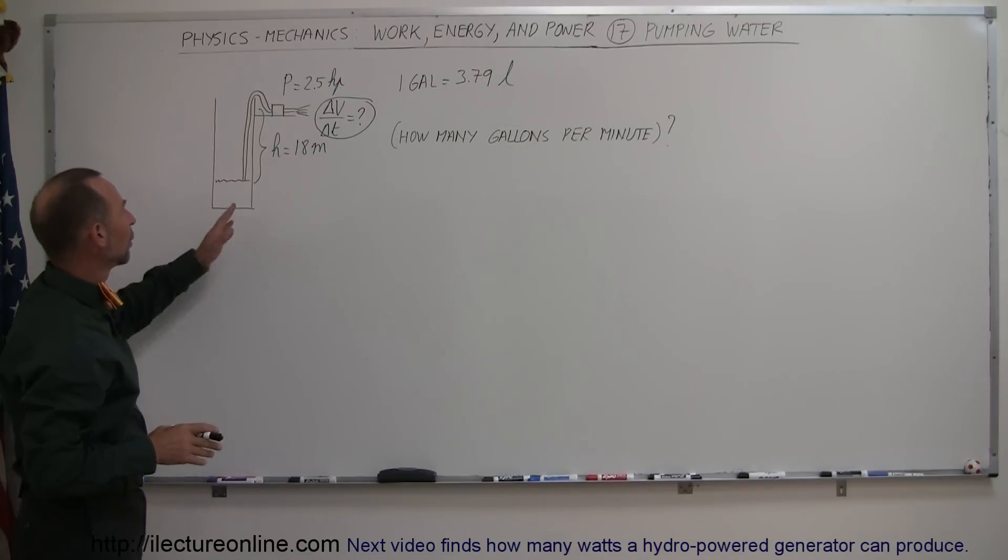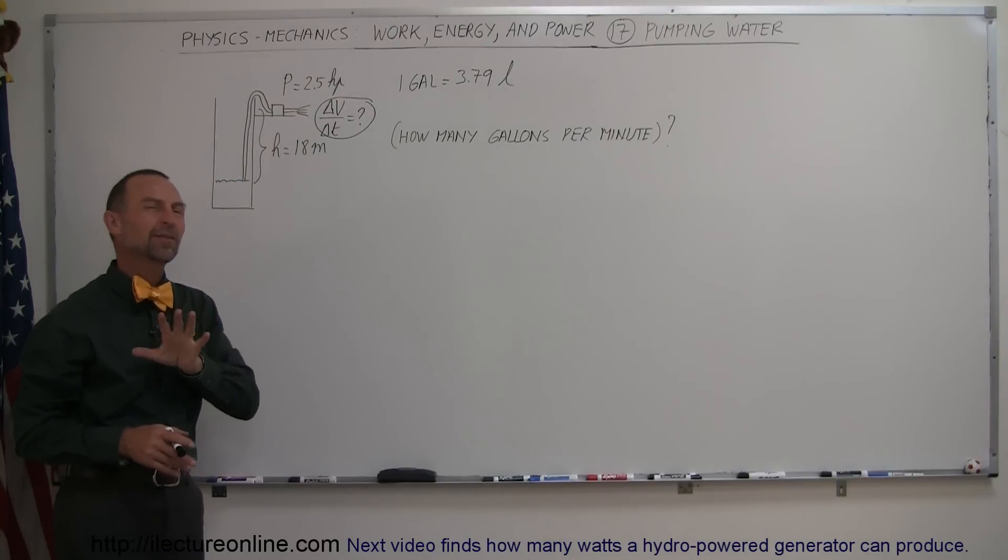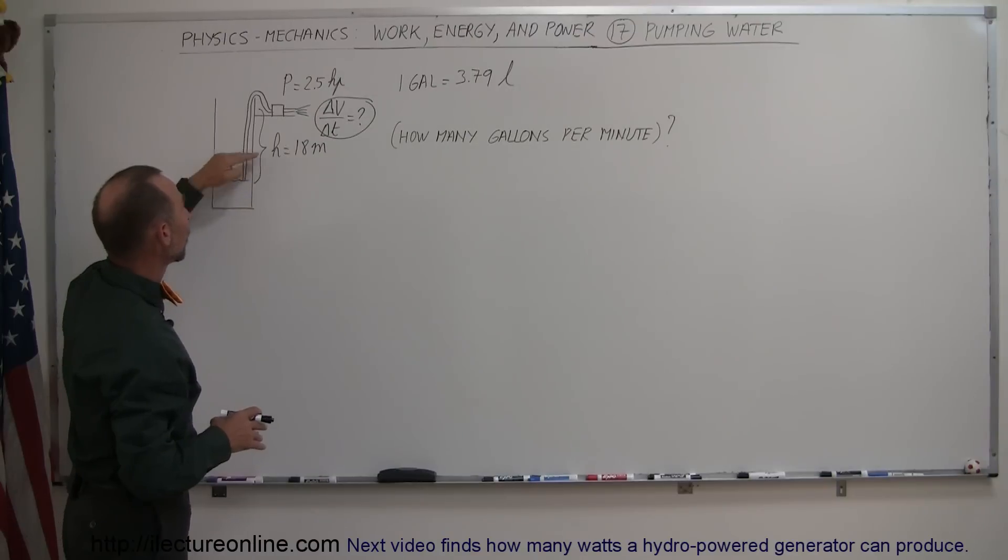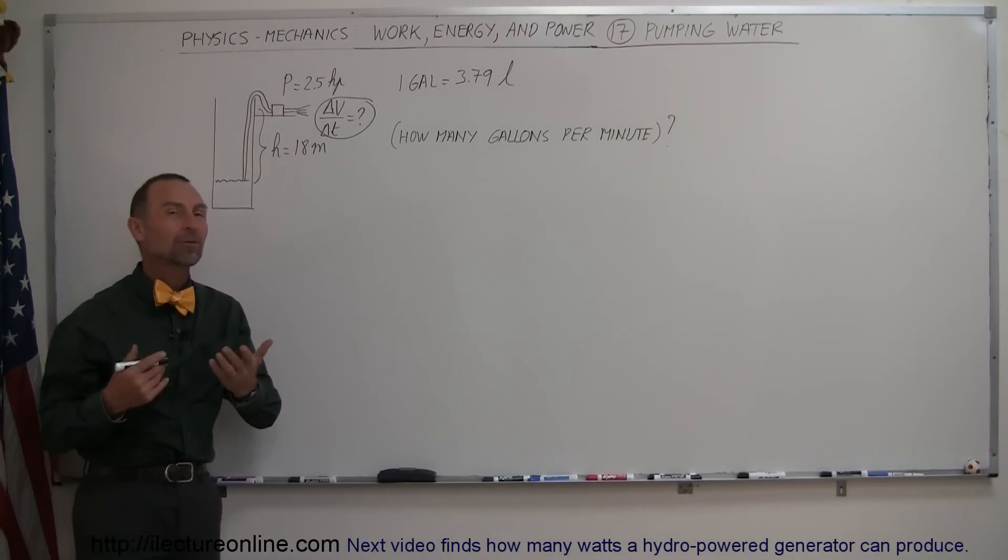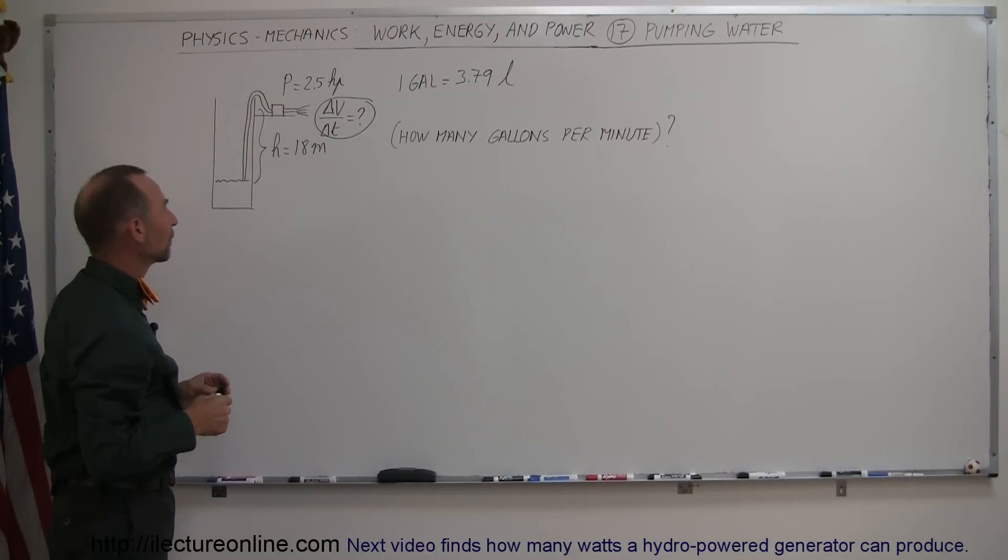To make things a little simpler, we're going to assume that the speed at which the water comes out of the pump is relatively small, so we ignore it. So most of the power is used to get the water from the well. That's 18 meters below, the water level is 18 meters below the ground level. So how much power is required to pump water out of the well?